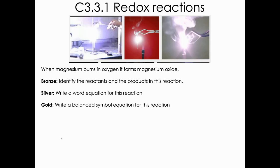The first task was to identify the reactants and products. When magnesium burns in oxygen, those two are our reactants, and it forms magnesium oxide, so that's our product.